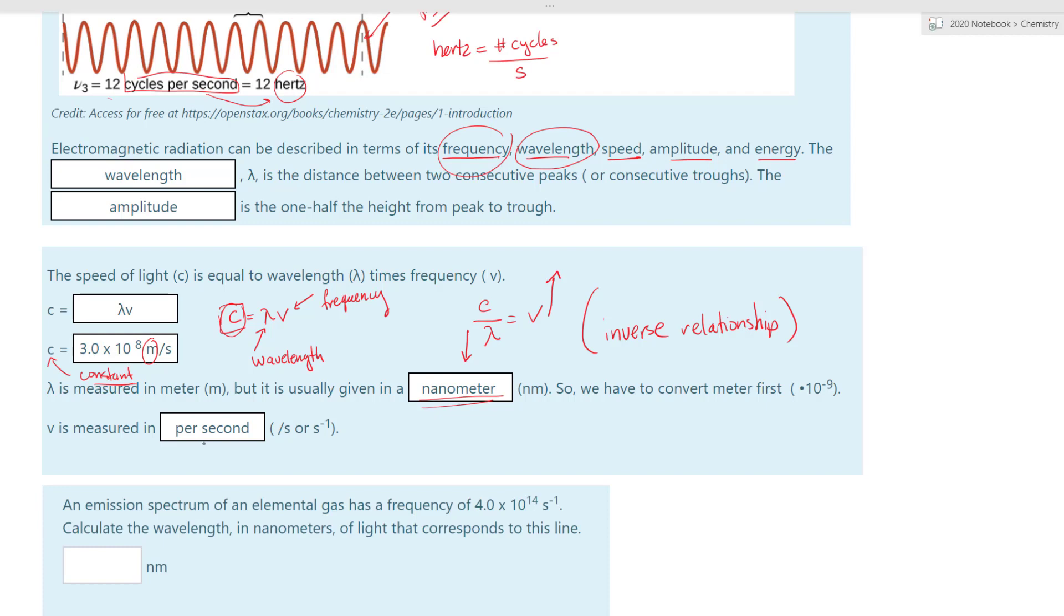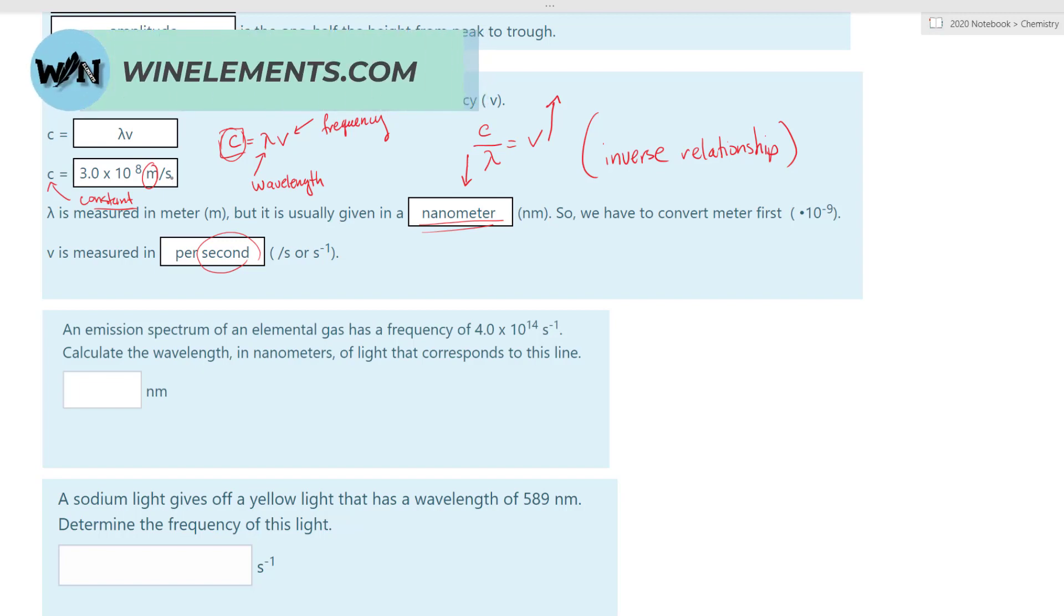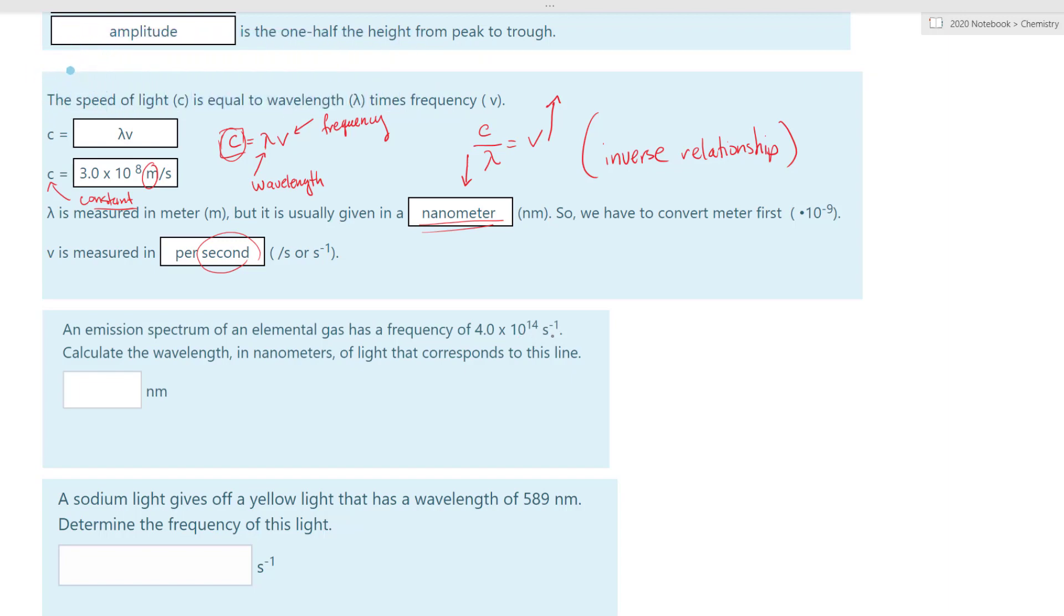And then sometimes, frequency is given to you in different time frames. But if it is, you have to convert to seconds, and you all know how to do that already. So let's solve a problem. So again, be careful with the unit. That's the most important thing. You have to be careful with the unit. The wavelength has to be measured in meters, and frequency has to be measured in per second. Now, let's do an example problem.